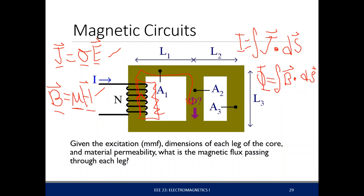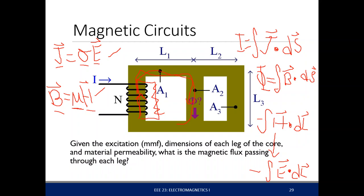There is also a concept of magnetic potential. Magnetic potential comes from the integral of H·dl — specifically, the negative integral of H·dl — which looks just like the negative integral of E·dl. However, this H·dl, if we create a loop around a given path, has a value that is non-zero.